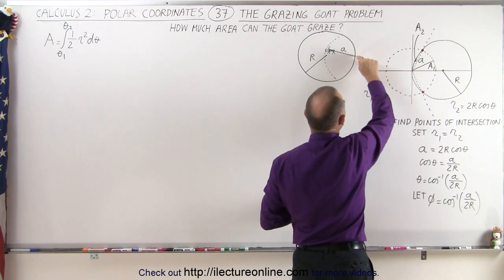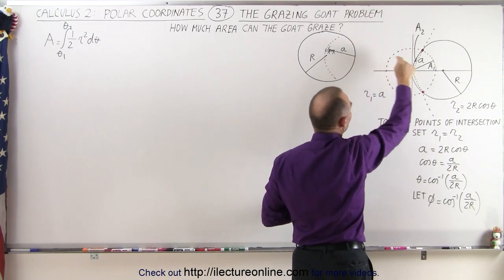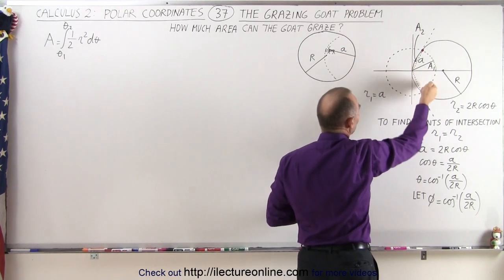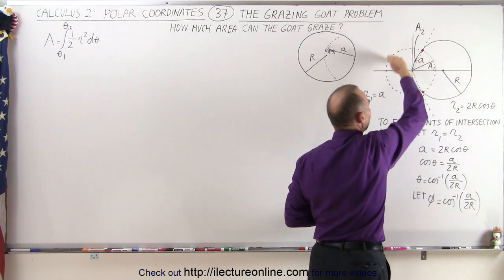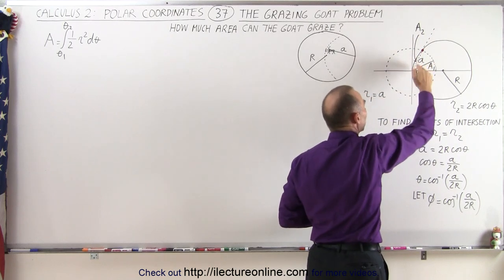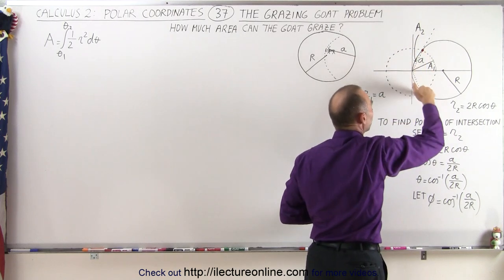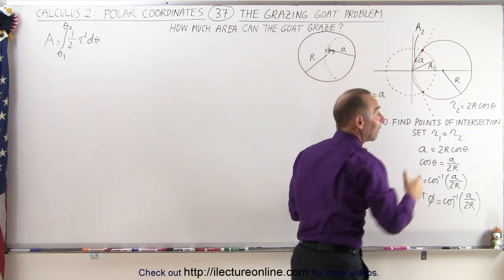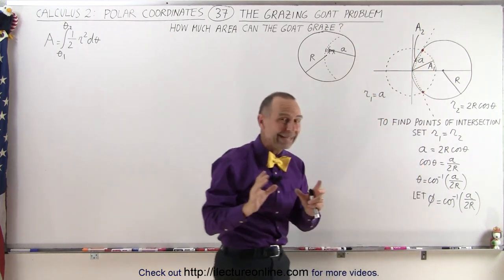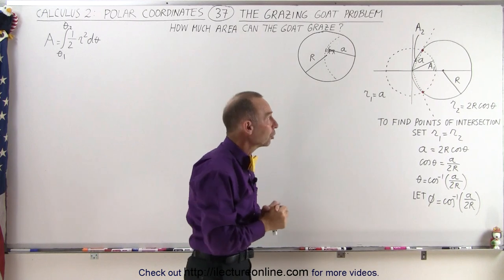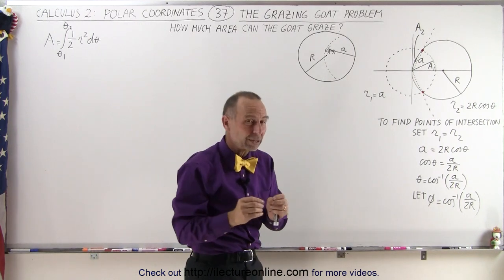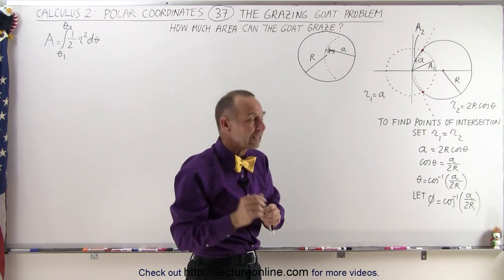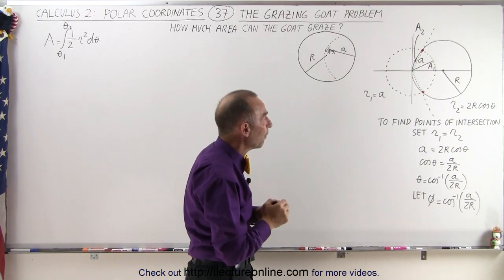We also put the edge of the rope at the origin. The goat could normally graze a larger area, but we're only concerned with finding the area inside the enclosure. From that perspective, it looks just like the previous video.